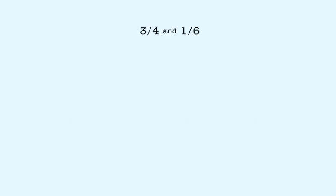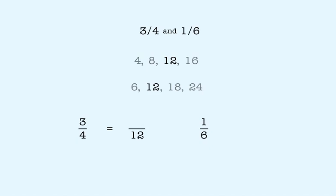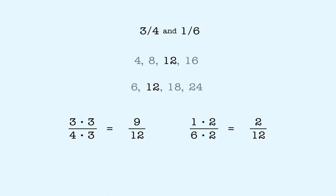The least common multiple is twelve, so the least common denominator is twelve. We now rewrite each fraction with a denominator of twelve. Three-fourths becomes nine-twelfths, and one-sixth becomes two-twelfths.